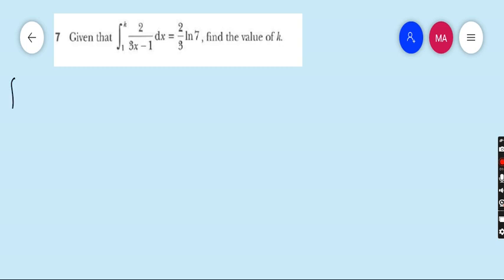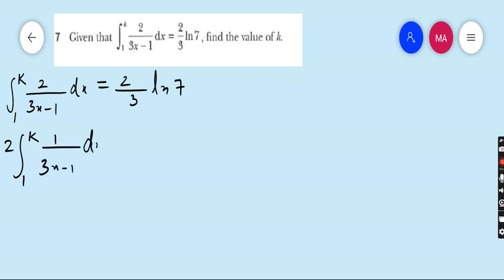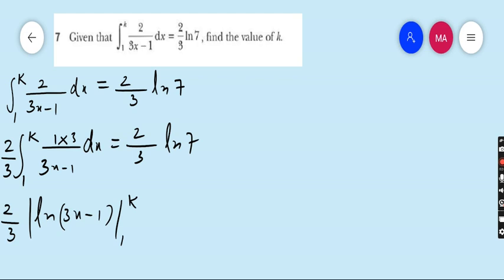Given that integrate 1 to k, 2 upon 3x minus 1 dx is equal to 2 upon 3 ln 7, find the value of k. Very easy. First take 2 outside from the sign of integration, it is 1 upon 3x minus 1. Right hand side is same. The derivative of denominator 3x minus 1 is 3, so write 3 in numerator and divide by 3 as well, so 2 upon 3 ln denominator, that is 3x minus 1 is the integration and limit 1 to k. Right hand side no change, 2 upon 3 ln 7.